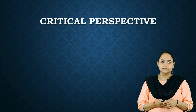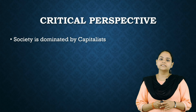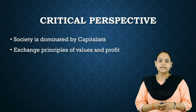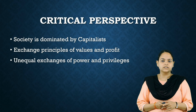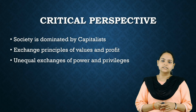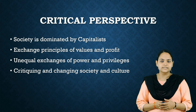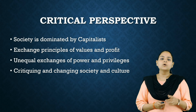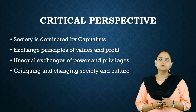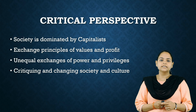Another major sociological perspective is the critical perspective, which says that we live in a society dominated by capitalists, based on exchange principles of value and profit. Capitalist society is not a peaceful society but one based on unequal exchanges of power and privileges. Critical theory aims at critiquing and changing society and culture, unlike traditional theories whose aim is only understanding or explaining it. For example, instead of seeing the behavior of homeless youth as criminal, the critical perspective asks why the youth became homeless and why they are connected to criminal behavior. Critical theorists like Horkheimer criticized science as harmful and controlled by elites, and also critiqued the role of media in diverting people's attention and making them mere consumers.